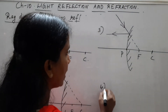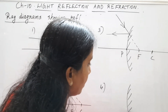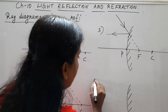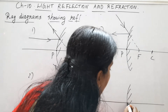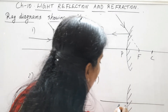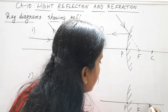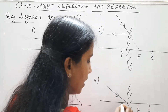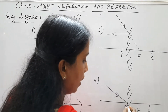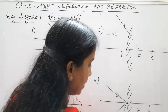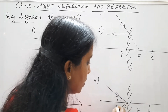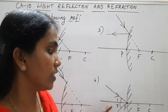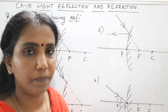The fourth case for the convex mirror is when the incident ray strikes at the pole. Here we have F and C. The same thing applies: the principal axis acts as the normal, so the reflected ray makes the same angle — angle of incidence I equals angle of reflection R — with the principal axis acting as the normal.